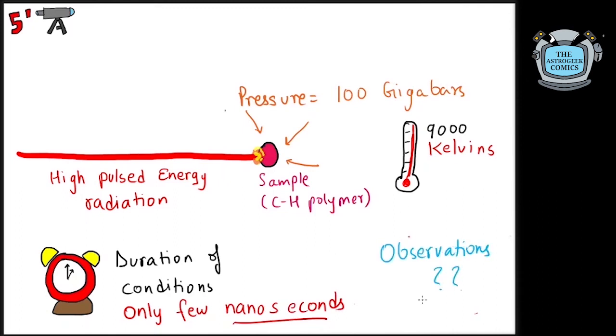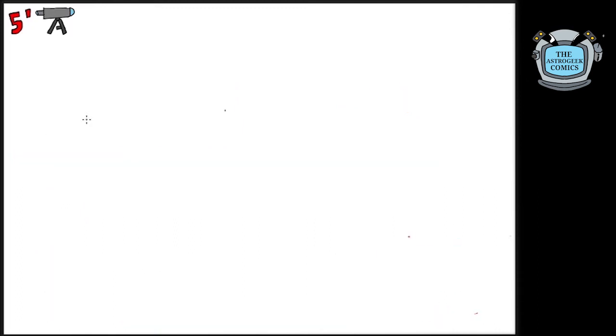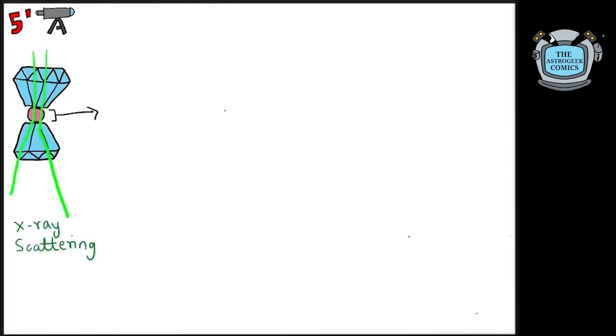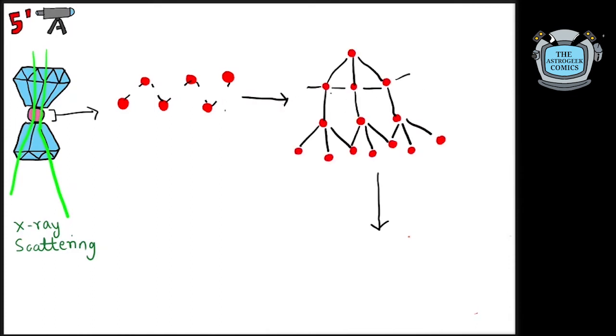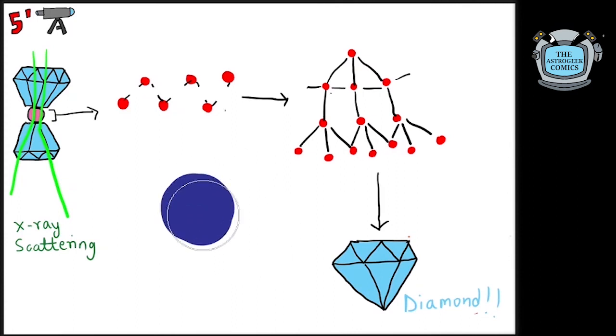So what did the researchers observe? They studied how X-rays got scattered from the polymer and they could actually detect carbon hydrogen chains breaking and carbon atoms arranging themselves in a diamond-like crystal structure. These nanodiamonds were created in conditions similar to that exist inside these icy giants.